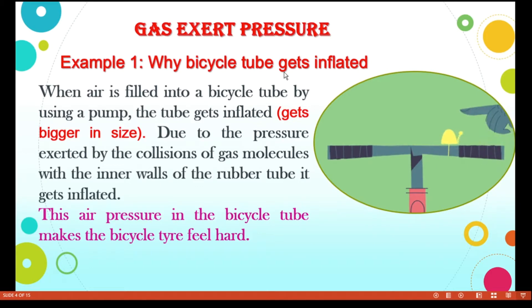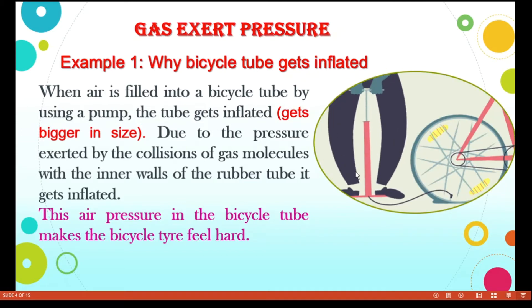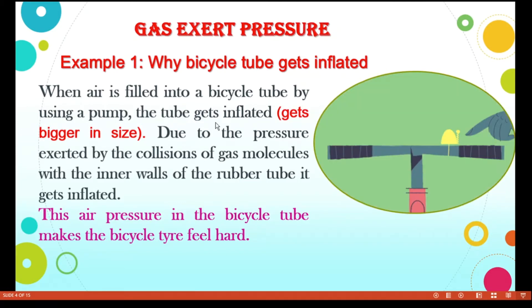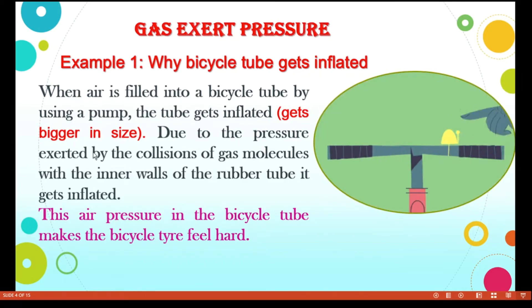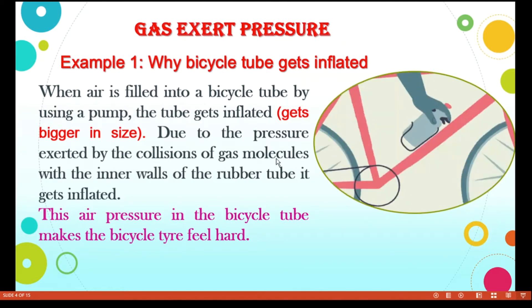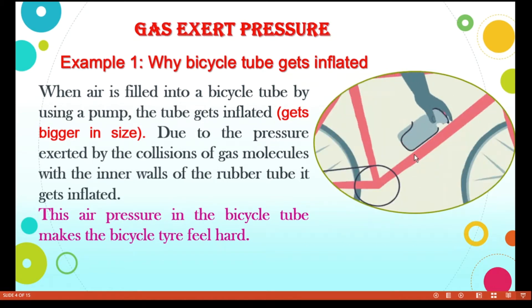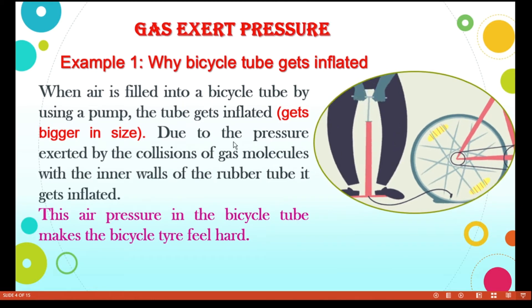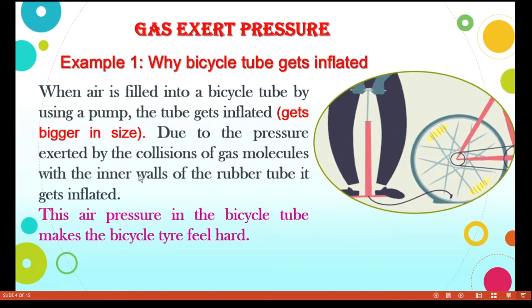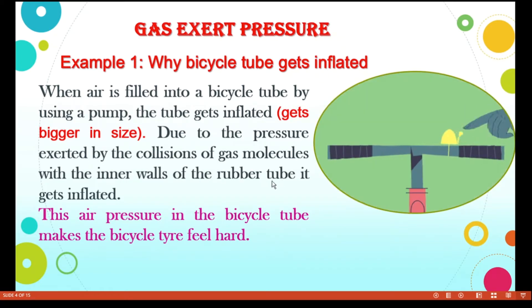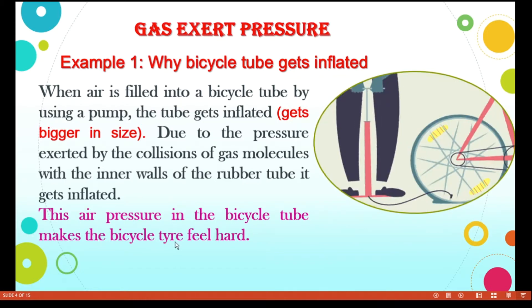Why does a bicycle tube get inflated? When air is filled into the bicycle tube using a pump, the tube gets inflated — that is, it gets bigger in size. This is due to the pressure exerted by the collision of gas molecules with the inner walls of the rubber tube. This air pressure in the cycle tube makes the bicycle tire feel hard.